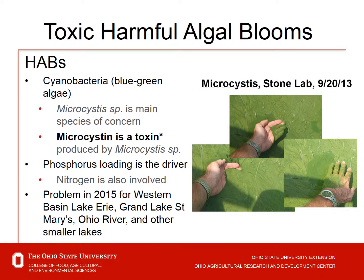Toxic harmful algal blooms — we abbreviate these as HABs — are created here in Ohio by cyanobacteria, which is a blue-green algae, or more precisely a bacteria. Microcystis is the main species of concern for us here in Ohio. The microcystin toxin produced by Microcystis species is a liver toxin, and phosphorus tends to be the primary driver for that in freshwater.